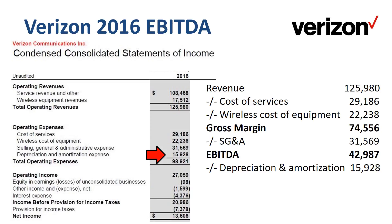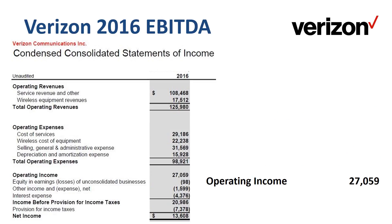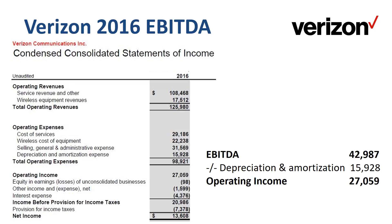Take EBITDA and deduct depreciation and amortization, and you get to operating income of $27.1 billion. The quicker way is to take method two, which starts with the operating income. Add back depreciation and amortization of $15.9 billion, and you have EBITDA.